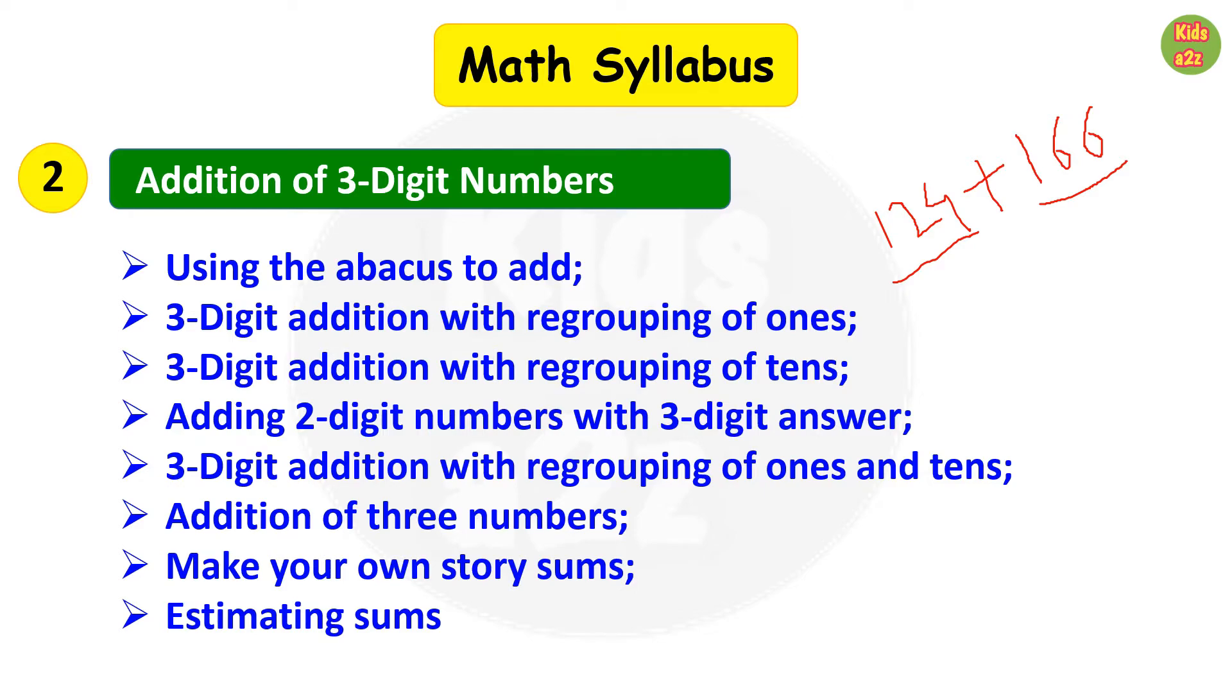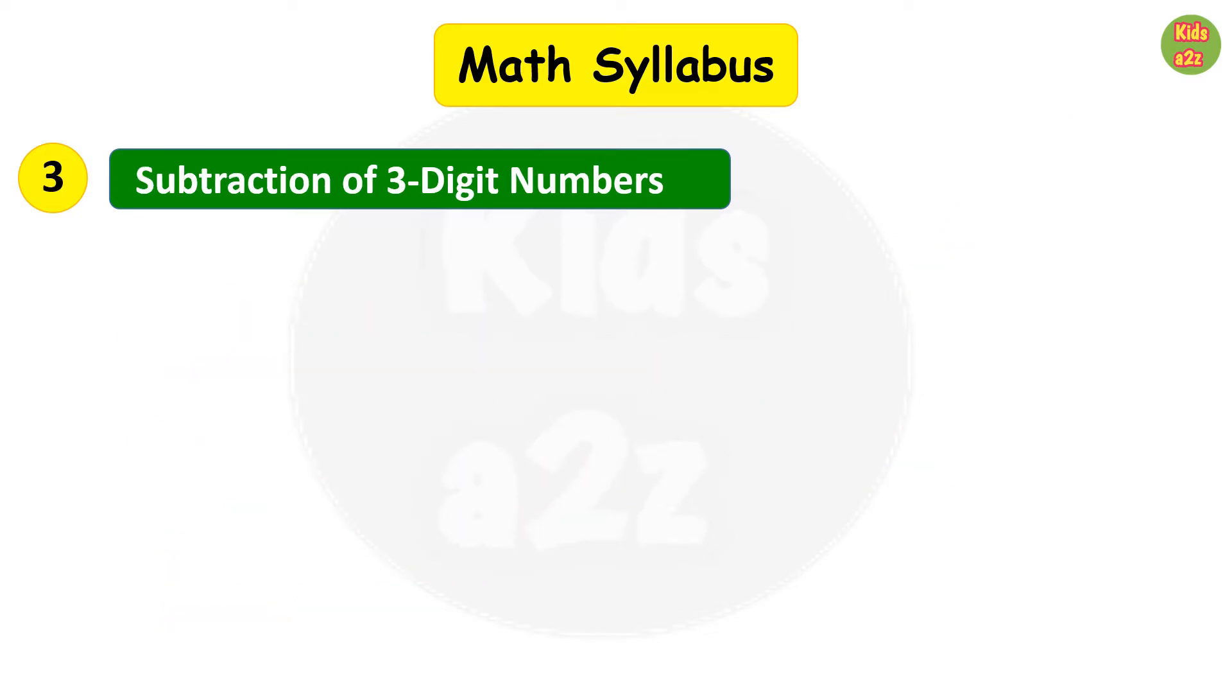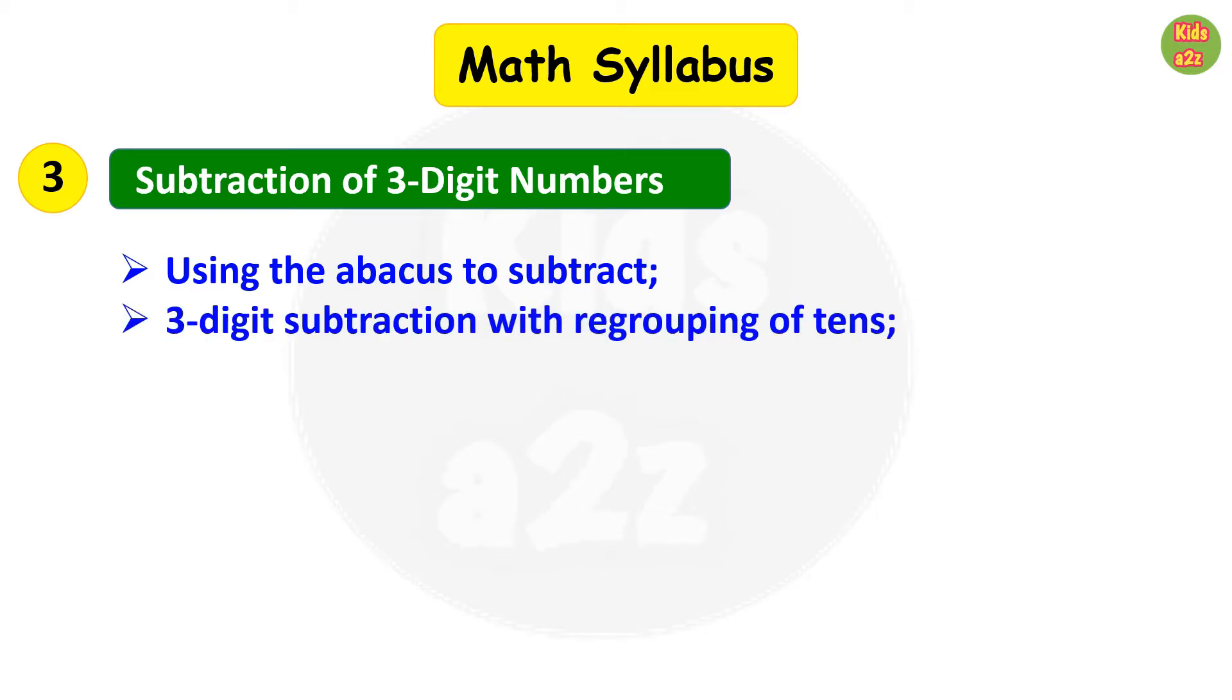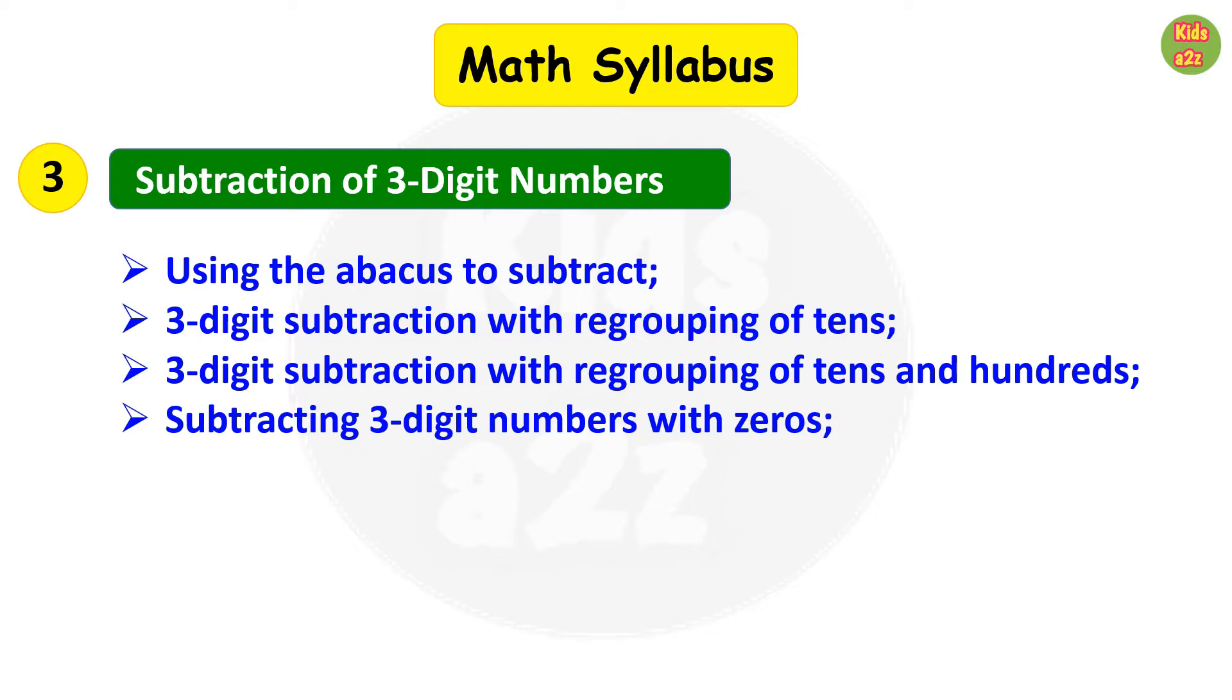Third chapter is subtraction of three-digit numbers. They will learn using the abacus to subtract, three-digit subtraction with regrouping of tens, three-digit subtraction with regrouping of tens and hundreds, subtracting three-digit numbers with zeros, make your own story sums, and estimating differences—that means they need to estimate the difference between two three-digit numbers.